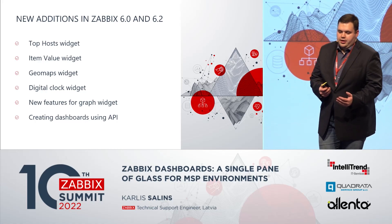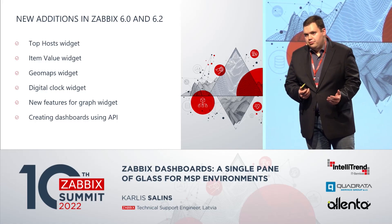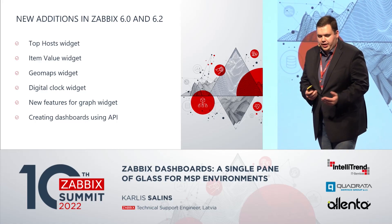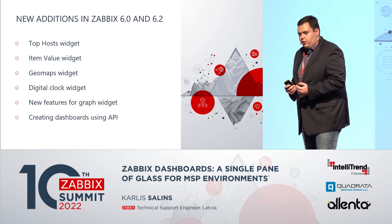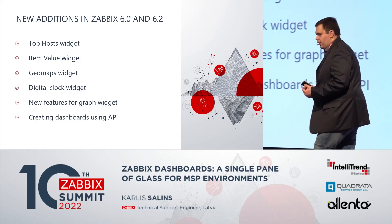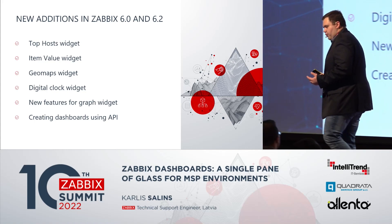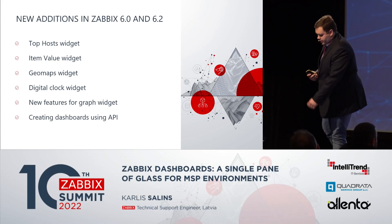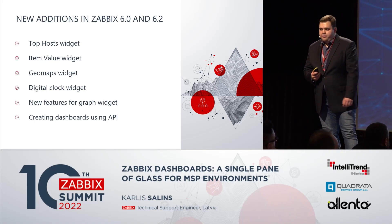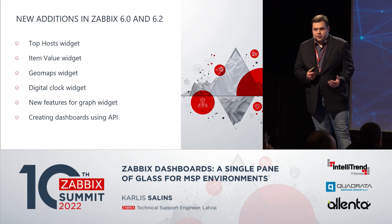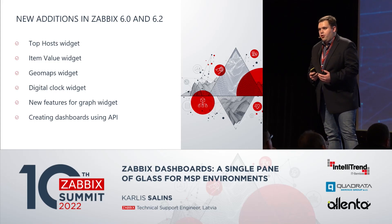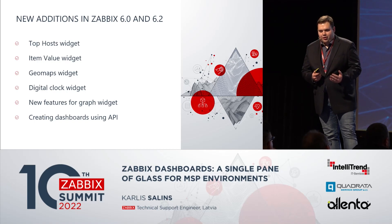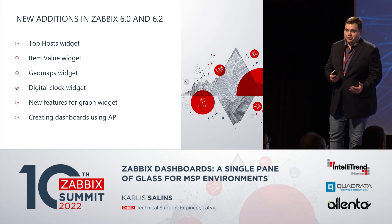What are the new additions in Zabbix 6.2 and 6.0? Multiple widgets have been added: top hosts widgets, item value, geomaps, and digital clock widget. In the following slides we'll cover how they work and what they are. There have also been new functionalities for the graph widget. And it's possible to create dashboards using the API, so if you know how to script it, you don't even need to visit the frontend in order to create a dashboard.